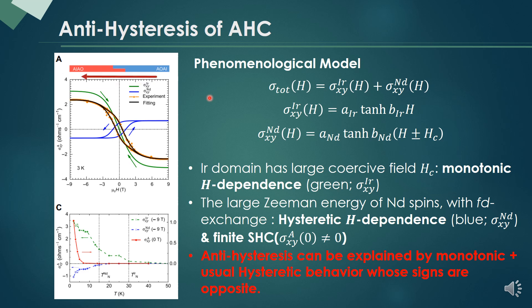On the other hand, when the sweep direction is reversed, we add this green graph with this blue graph. Then we can find another anti-hysteretic behavior. Therefore, the anti-hysteresis can be explained by the monotonic and usual hysteretic behavior whose signs are opposite.